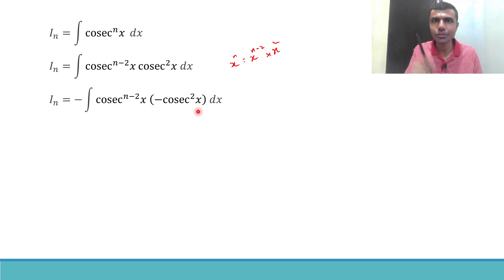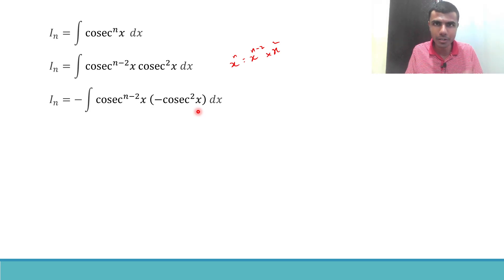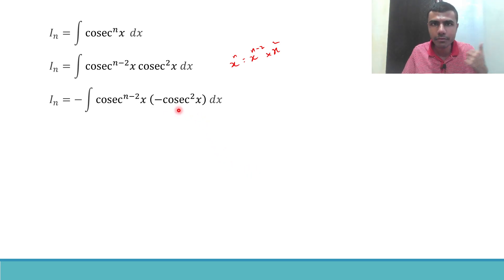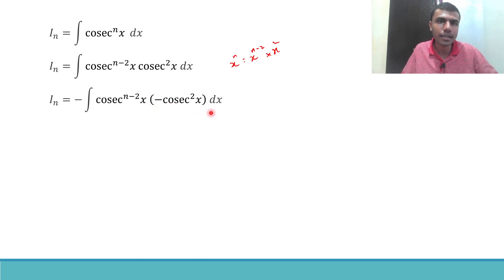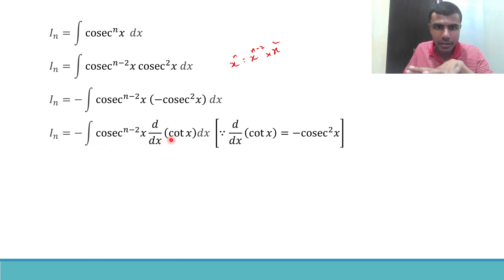Question for the audience: whose derivative is minus cosecant squared x? You can pause here and put your answer in the comments. Krishna got it right — it is cot(x). The derivative of cot(x) is minus cosecant squared x. So instead of writing minus cosecant squared x, I'll write it as the derivative of cot(x).